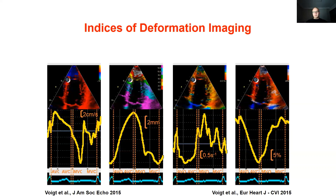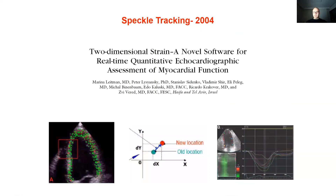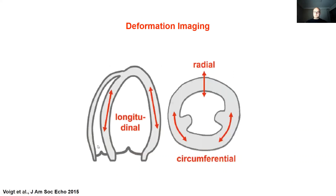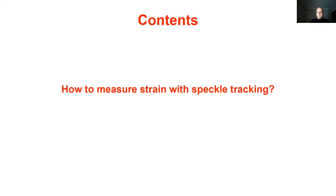Deformation imaging can provide many parameters like velocity, strain, strain rate, and displacement. Tissue Doppler was the first method used for assessing deformation. However, in 2004, a novel methodology was introduced called speckle tracking. It depends on following the bright speckles on myocardium during the time course. With this method, all deformation parameters — but mainly strain — can be calculated from 2D echo images. Strain can be in three directions, and among those, longitudinal strain is the most commonly used as it is more robust and reproducible.